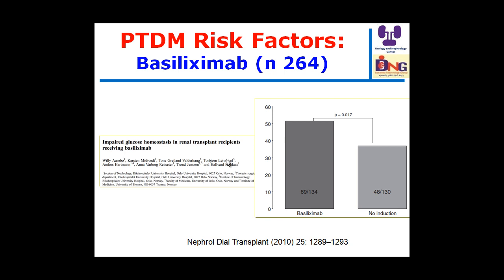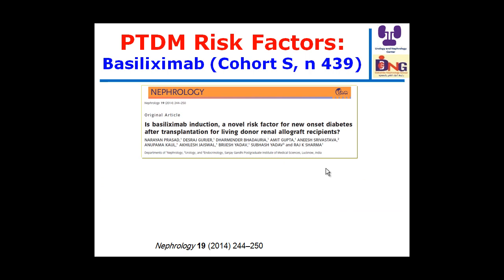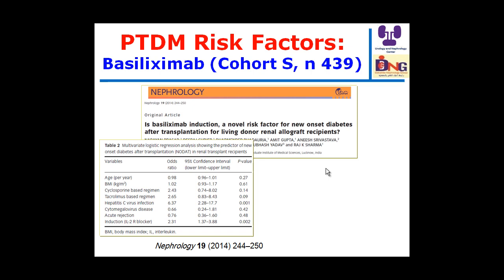A cohort study shows that basiliximab use is associated with significantly higher diabetes, with an odds ratio of 1.8 on univariate and a twofold increase on multivariate analysis. Another study confirms basiliximab induction is a risk for new onset diabetes after transplantation, with the odds ratio for basiliximab approximately twofold higher compared to other immunosuppressive predictors including cyclosporine, tacrolimus, and hepatitis C.